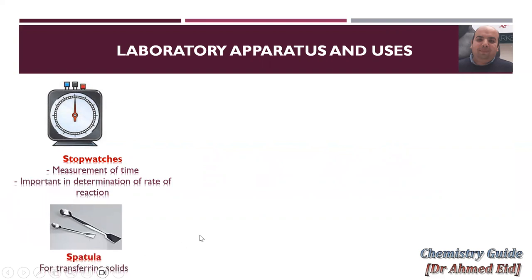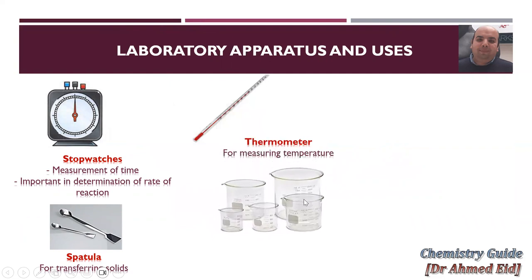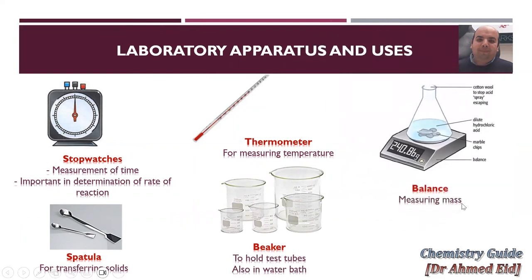Spatula is used for transferring solids. Thermometer is used for measuring temperature. A clamp is used to hold test tubes and also used in water baths. Balance is used for measuring mass. Remember that in the experiment of marble chips reacting with dilute hydrochloric acid, carbon dioxide gas is evolved and we use cotton wool to allow carbon dioxide to escape, so mass on the balance will be decreased. Cotton wool is also used to avoid splashing or spraying of the acid when marble chips are added.